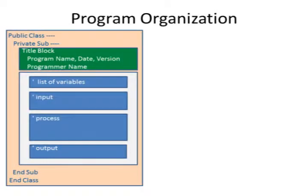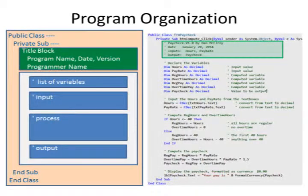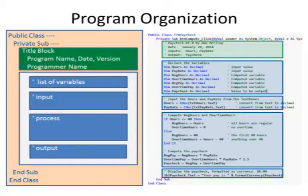Once we have laid out all the objects on the form, we need to do the code section. Here is a sample of what a code section should look like. I'm going to start off with the title block, then a list of variables, my inputs, process, and output. We'll use this sample for almost all of our programs.